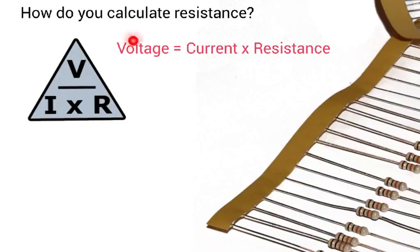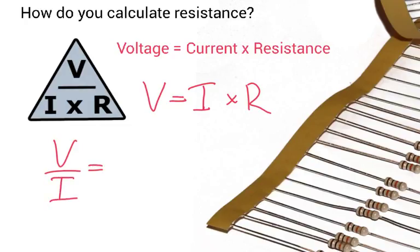Voltage is equal to the current times resistance, and we end up with the formula V equals I times R. So to work out resistance, do V divided by I. The current going through a conductor will give you R.